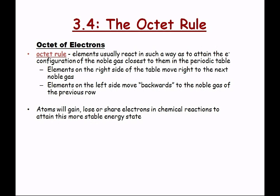Elements on the left side — the S-block and the first row of the P-block — will move backwards to the noble gas of the previous row. If we're looking at sodium, magnesium, or aluminum, they're going to go backwards to attain the neon configuration by losing 3, 2, or 1 electrons respectively.